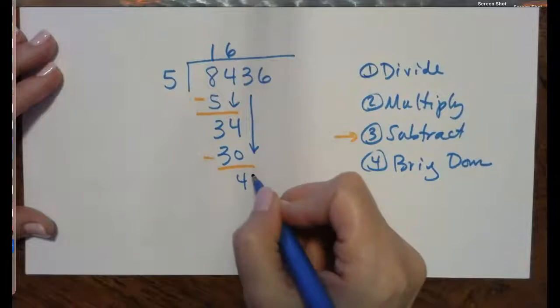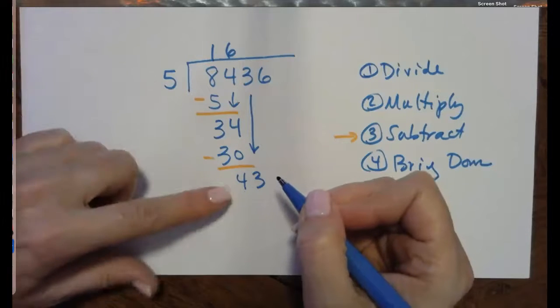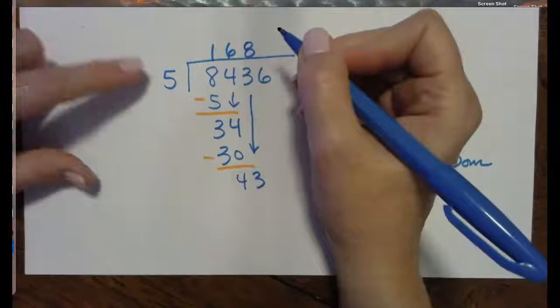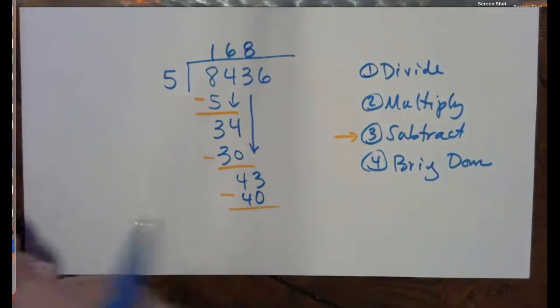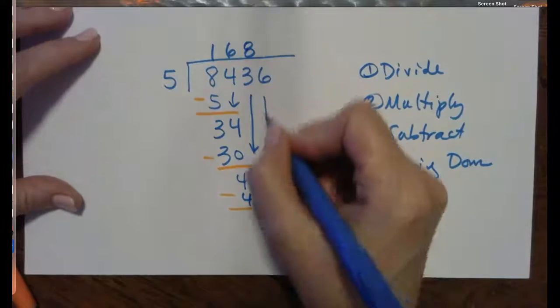4 left over, and bring down the 3. 5 goes into 43, 8 times, 8 times 5 is 40, draw the line, change the sign, that's 3 left over.